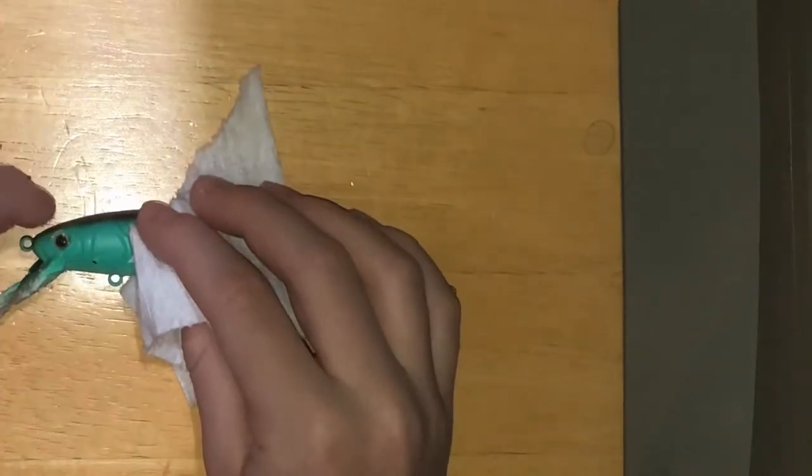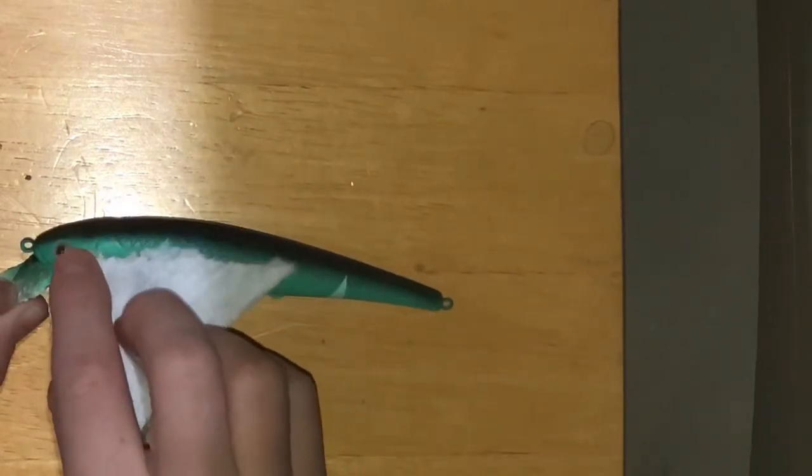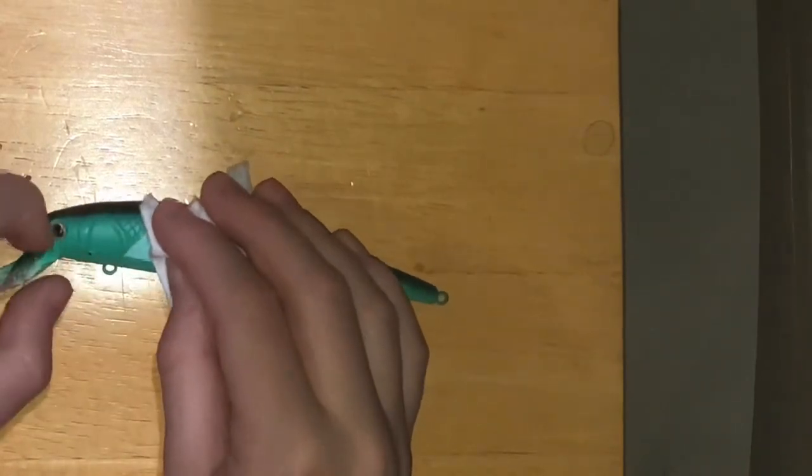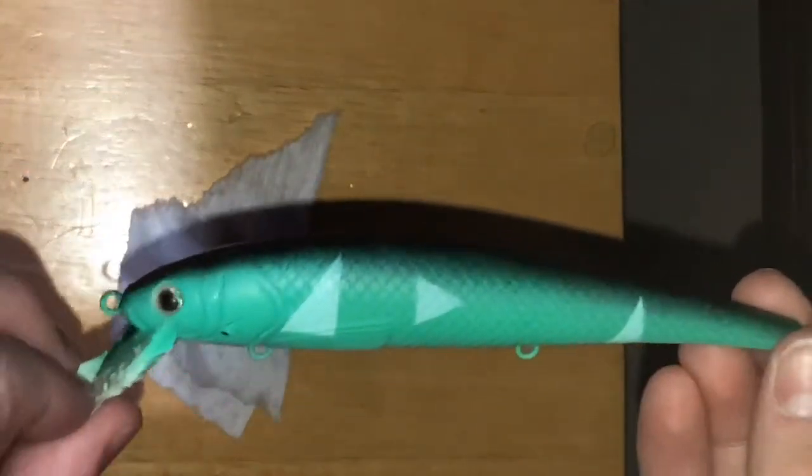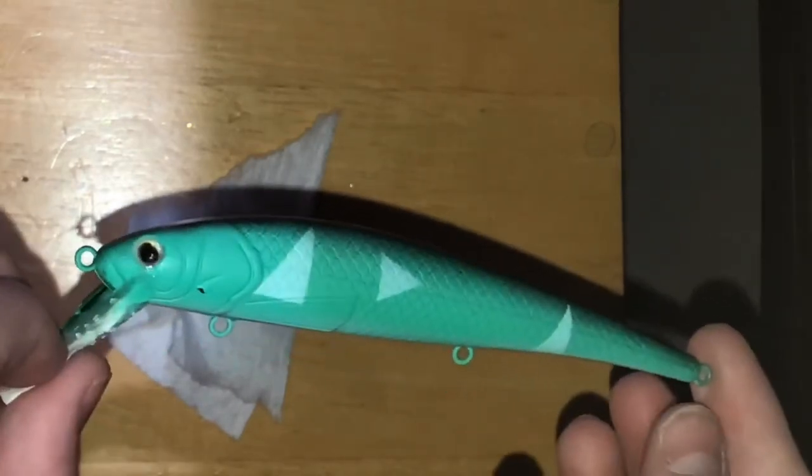Just dab on it a little bit. No, not like that. Dab on it, like, dab it with the paper towel, and there you go. You get the eye in the right way. So when this glue dries, it'll be clear, and it'll just look normal.